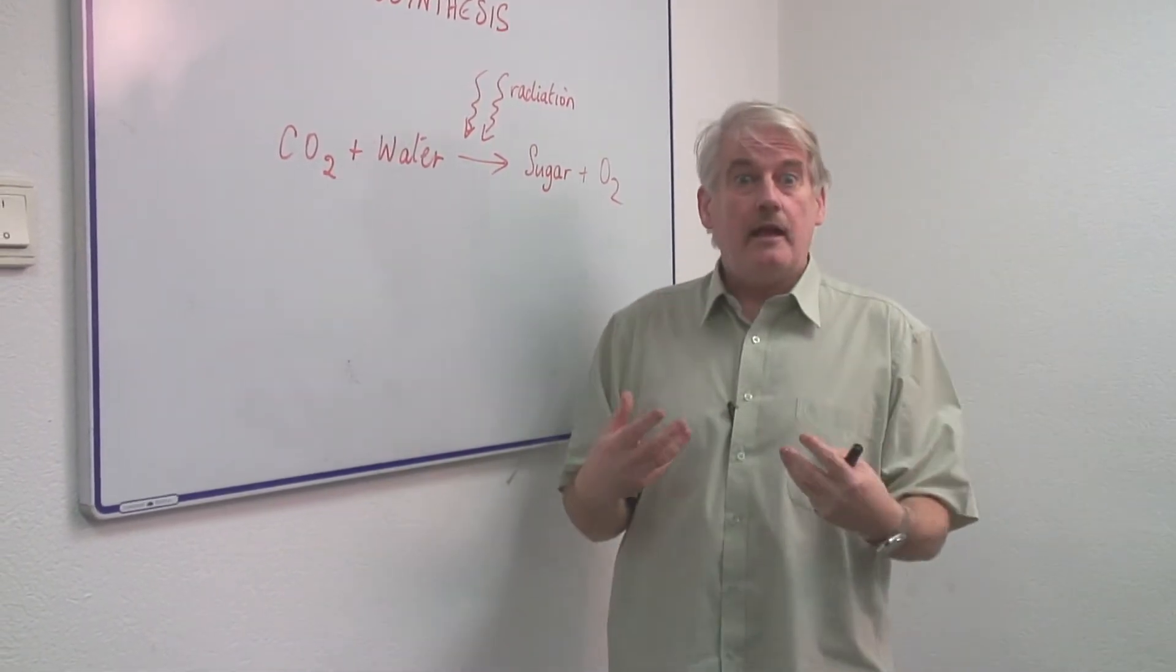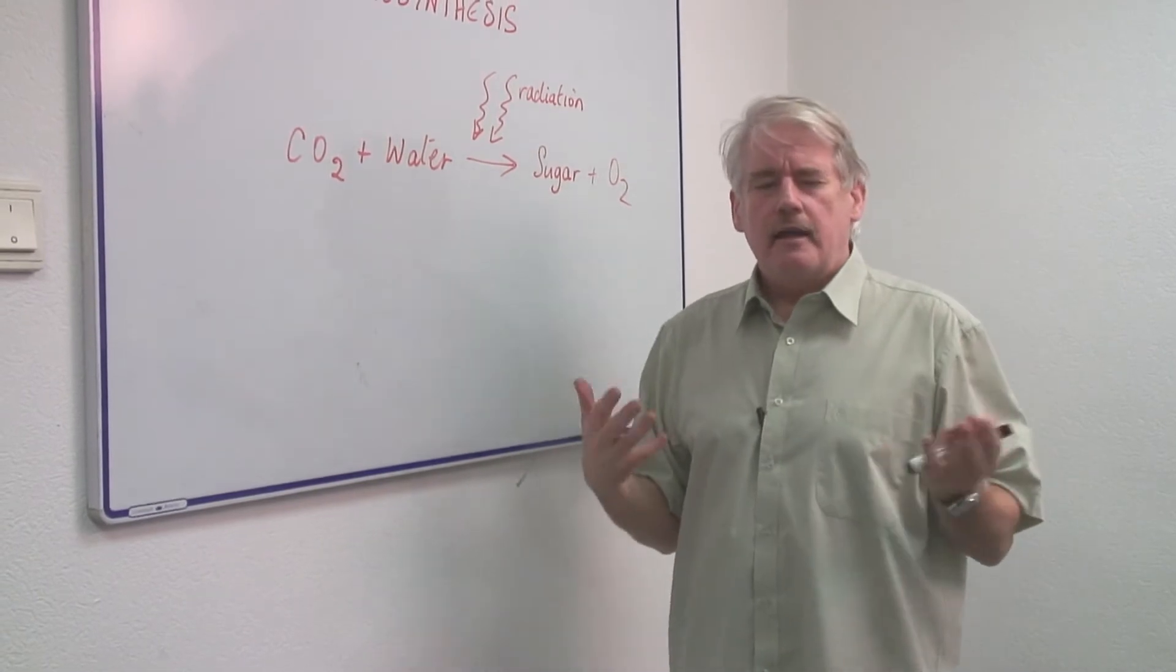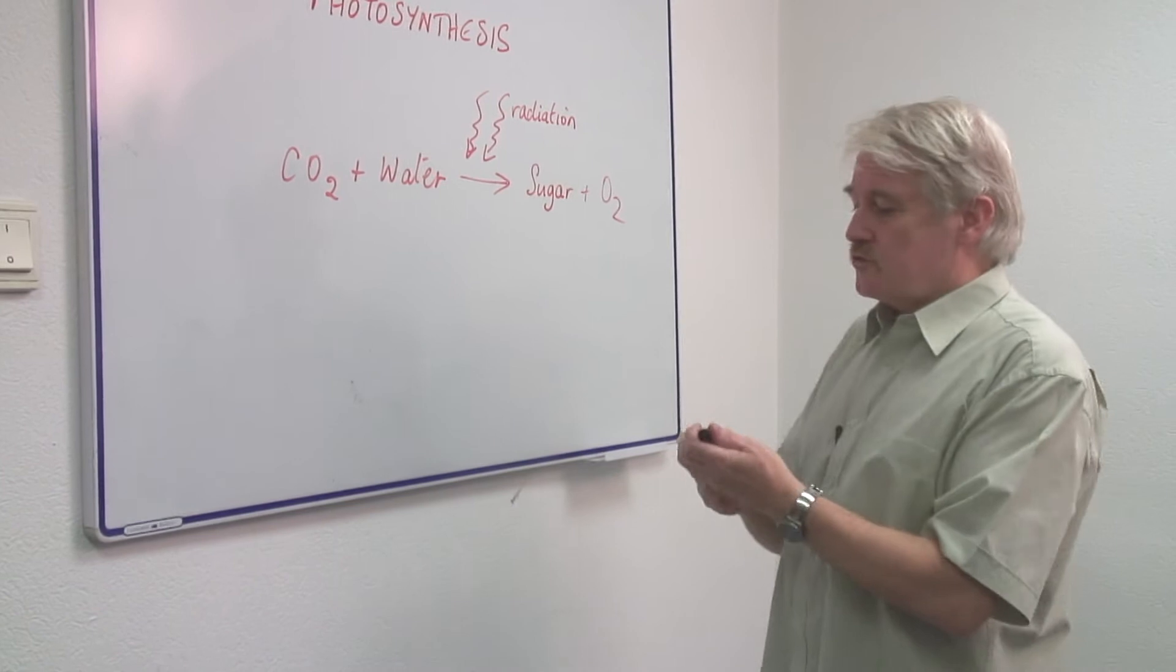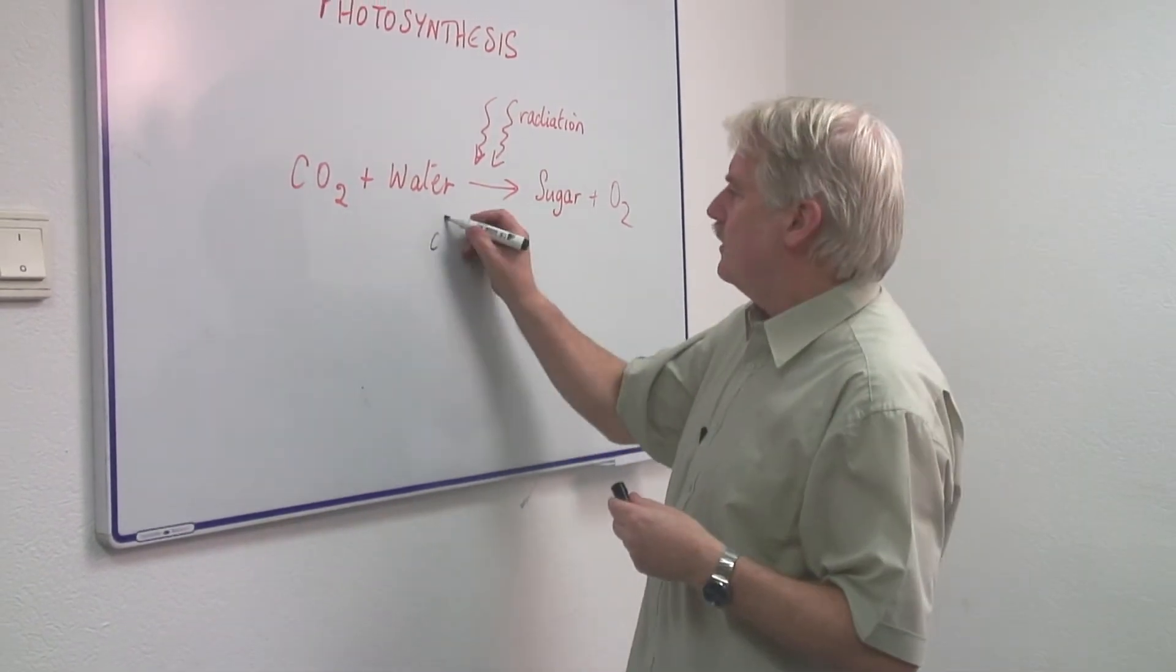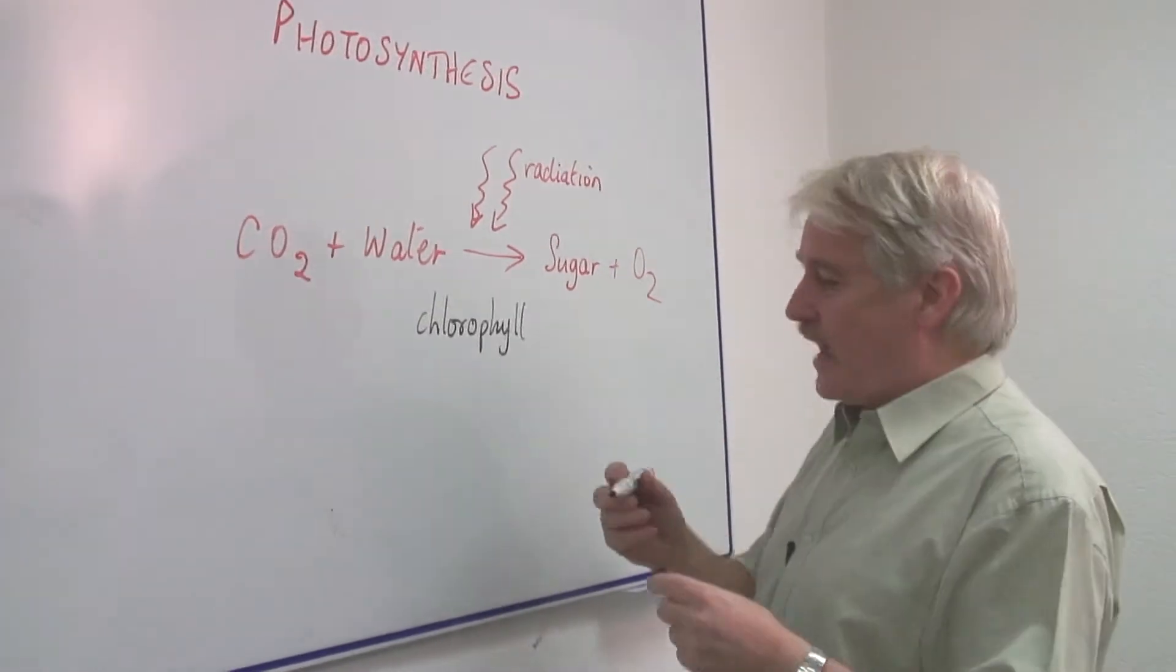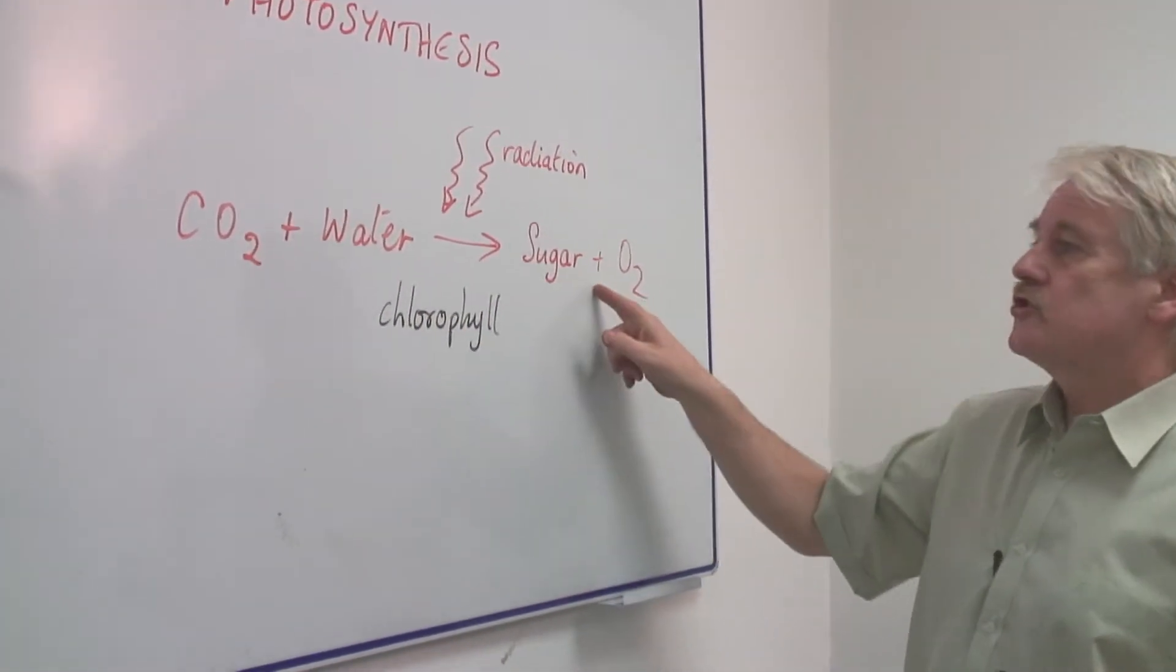The trouble is we can't photosynthesize. If we could we'd be green because we have to use a material called chlorophyll and the chlorophyll is what actually helps this reaction to occur.